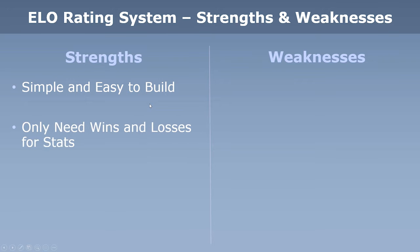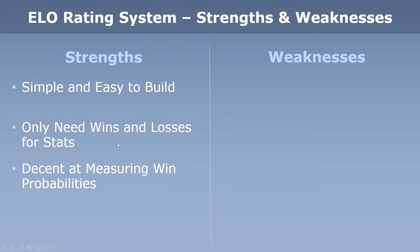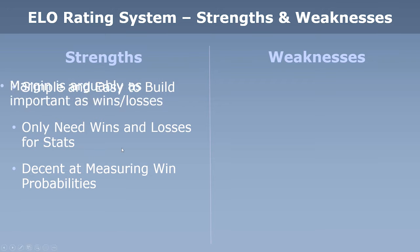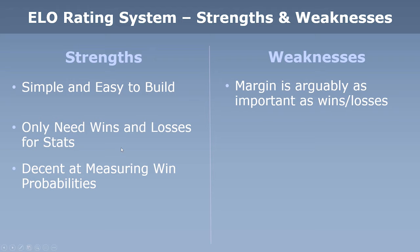You also only need wins and losses for your stats — you don't need to gather a lot of stats. The only thing you need is really the score to determine who won and lost a game, plus every team's wins and losses for the season or the stretch of time you're measuring. Lastly, it's still pretty good at measuring win probabilities. That's the whole point of the ELO system: measuring whether a team has a probability to win or lose.